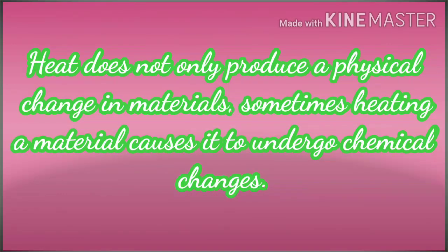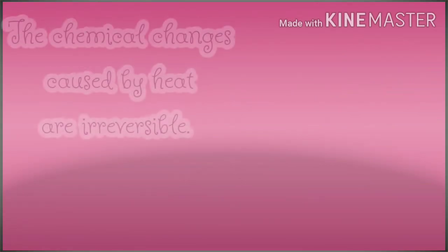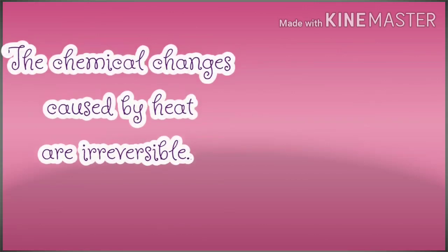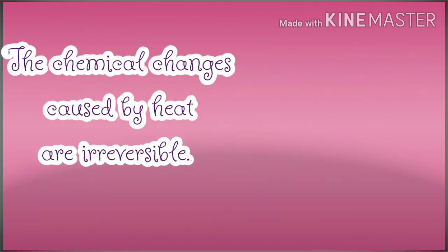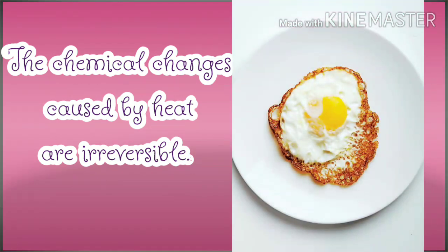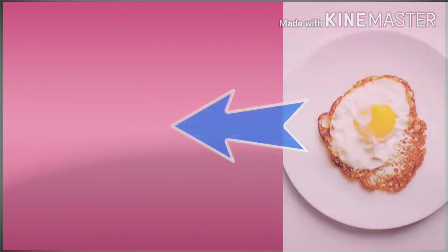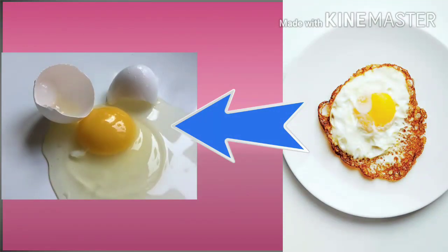Sometimes, heating a material causes it to undergo chemical changes. The chemical changes caused by heat are irreversible. One common example is cooked food. The egg your mother cooked for your breakfast has undergone a chemical change. Can you bring the egg back into its liquid form before it was cooked?